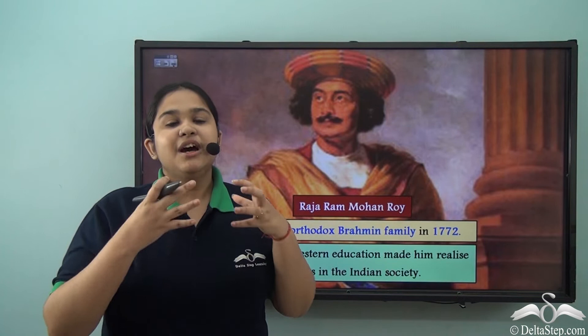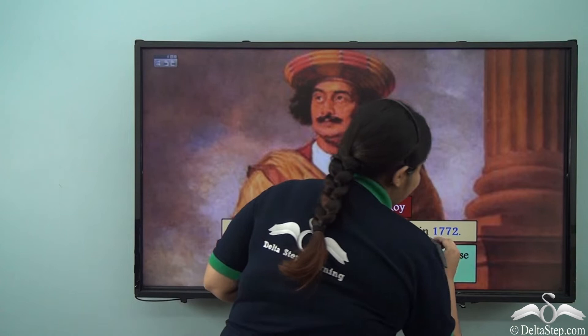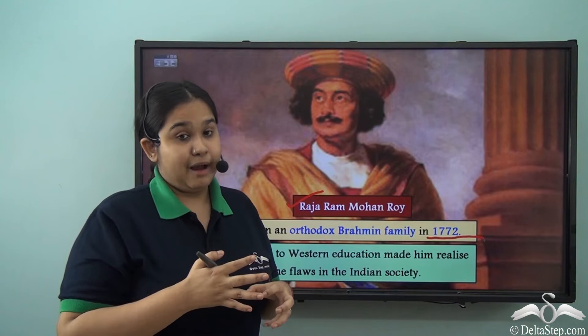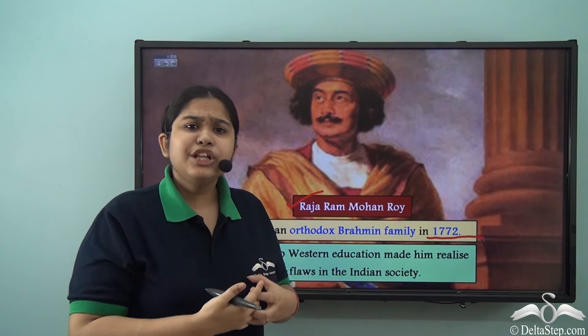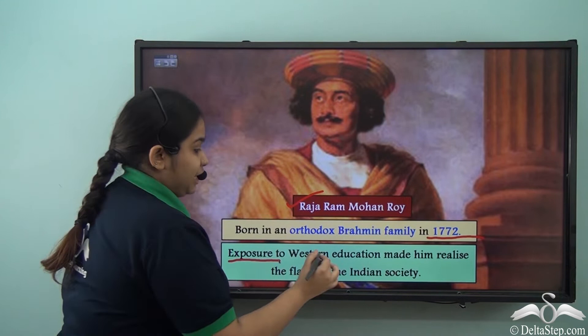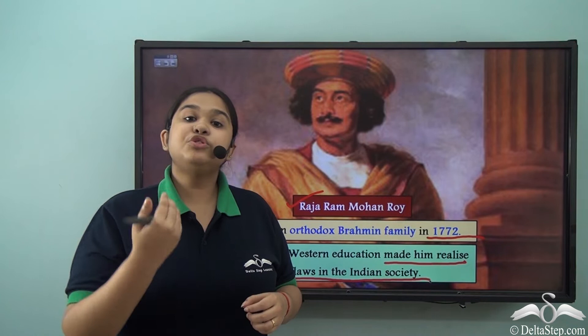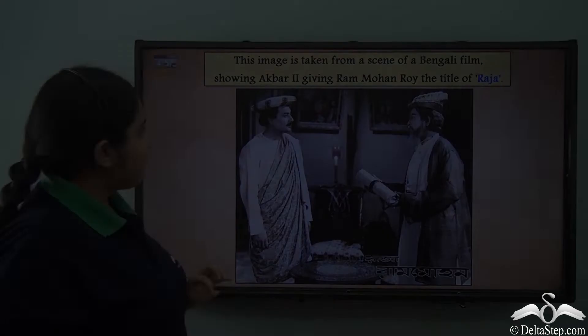One of the most famous and leading faces of this reform movement was Ram Mohan Roy. Raja Ram Mohan Roy was born in an Orthodox Brahmin family in 1772. Though born in an orthodox Brahmin family, he was introduced to Western education, and the exposure to Western education made him realize the flaws in Indian society. When he came face to face with these flaws, he came to the forefront to change the existing situation.